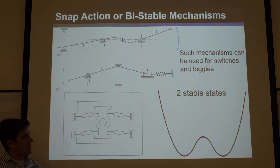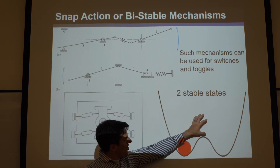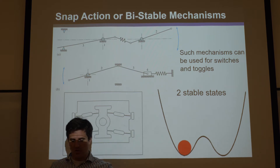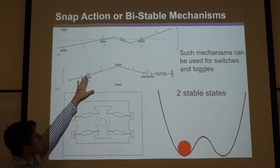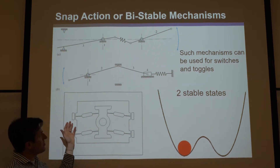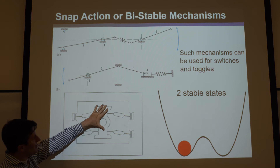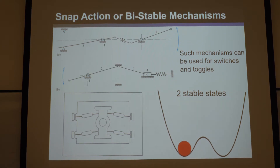If you plot the energy of a bi-stable system it looks like a hill — a ball on top is unstable and rolls to one of two lower-energy stable states. So the switch is stable either up or down. Instead of a rigid mechanism with an assembled spring, you can make one monolithic compliant mechanism — like a gate that snaps between positions with a satisfying click. These are very useful mechanisms.